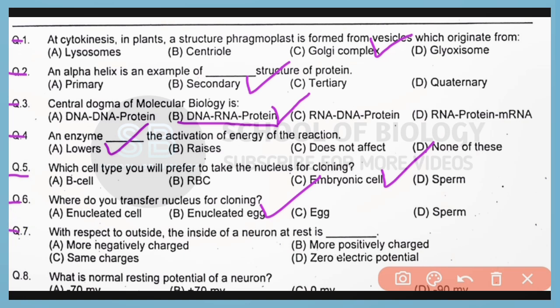Question 7. With respect to the outside, the inside of a neuron at rest is more negatively charged. Correct answer is option A.